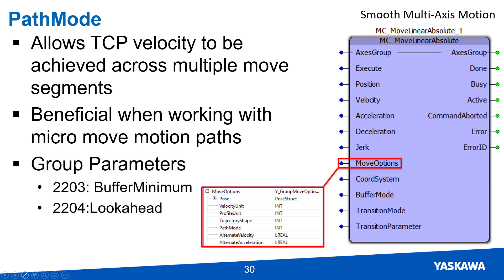Group parameters 2203, buffer minimum, and 2204, look ahead, can be adjusted to increase the amount of points path mode uses to reach the required velocity.